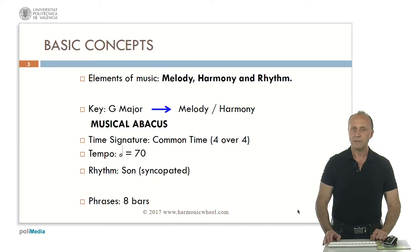The basic elements of music are melody, harmony and rhythm. In this case we chose the G major key and the musical abacus will give us the notes for composing the melody and the harmony, that is the chords. With respect to the time signature, it will be a common time that is 4 over 4 and the tempo half note equal to 70. The composition is a song typical from Cuba which has a syncopated rhythm.